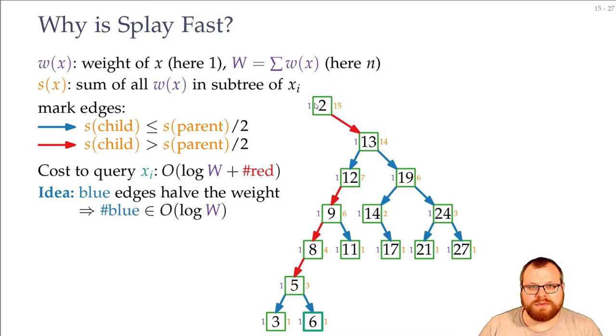But whenever we do have a long path, this 6 here, it will be splayed upwards. And intuitively, the tree will become a bit more balanced whenever we do that, so that later, the queries will be faster. And that's something that we have to look at. And that's where the amortization and the potential method comes in.